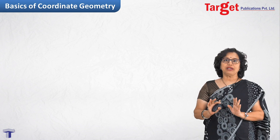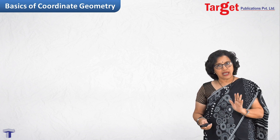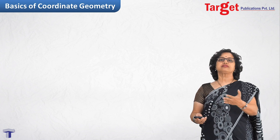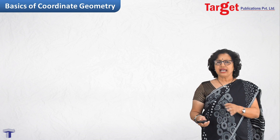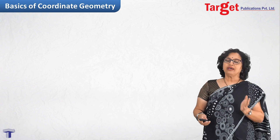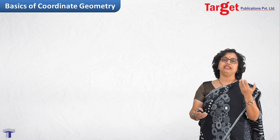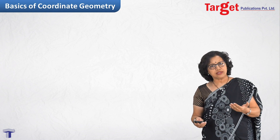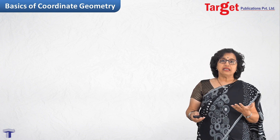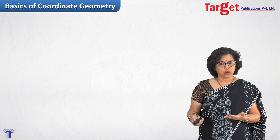In Coordinate Geometry, we need an origin, and distances are measured with respect to that origin. This is the simplest explanation for why we need Coordinate Geometry. As the chapter proceeds, you will understand its need more and more.